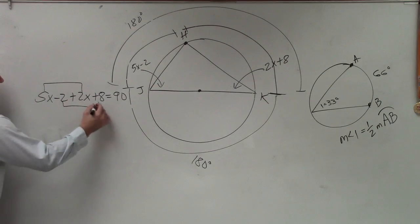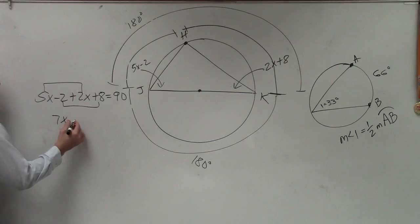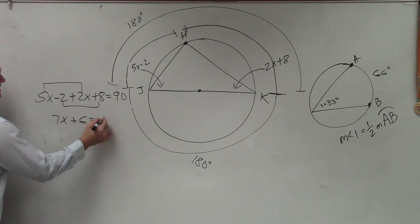Now, I combine my like terms. And I get 7x plus 6 equals 90.